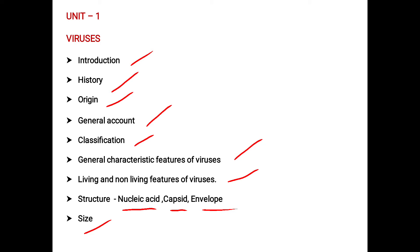Next we studied regarding the envelope, which is a protective layer made up of a glycoprotein coat. It consists of two lipid layers which provide protection for the virus. This is what we covered up to our previous classes.